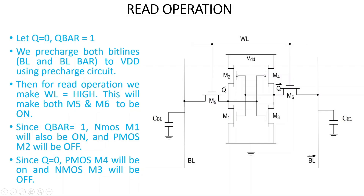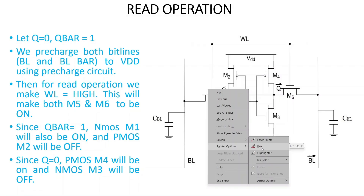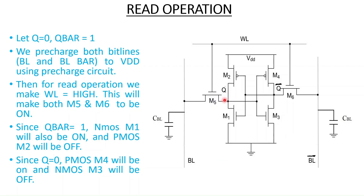Since Q bar equals 1, this Q bar is applied to the gate of the NMOS transistor, so that NMOS will be on. The same Q bar is connected to the gate of PMOS transistor M2, so M2 will be off because its gate is at logic high. Similarly, Q equals 0 is applied to the gates of M3 and M4 — M4 is PMOS and M3 is NMOS. Since Q equals 0, PMOS M4 will be on and NMOS M3 will be off.